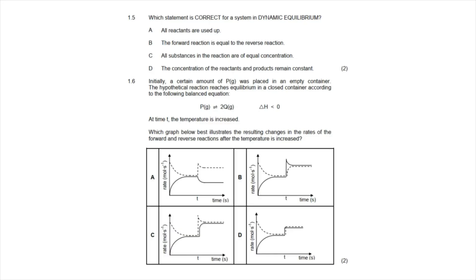Question 1.5 asks which statement is correct for a system in dynamic equilibrium. The correct answer is option D: the concentration of the reactants and products remains constant. Option A is incorrect because that is the definition for static equilibrium, when the reactants are used up and the reaction stops.